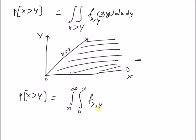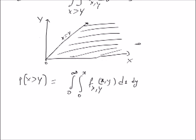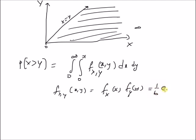Therefore, the probability of x greater than y is equal to the double integral with y from 0 to x and x from 0 to infinity of the joint PDF f(x, y) dx dy. Since x and y are independent, f(x, y) is equal to the product of the two marginal PDFs, f_X(x) and f_Y(y), which equals (1/6)e^(−x/3 − y/2). This is the joint PDF.